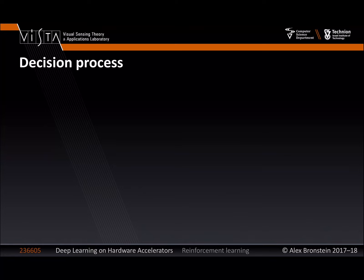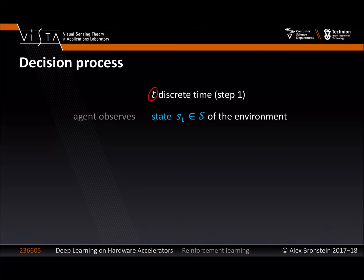I'd like to formalize the process of making decisions. This setting is all about making decisions — playing a game is about making decisions. I will assume a timed process with a discrete time variable T that increments in units of one. The agent observes a state S_T at time T — one of the possible states in which the world can exist. State will be denoted in blue.